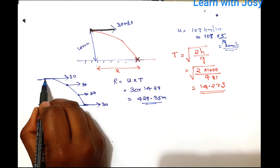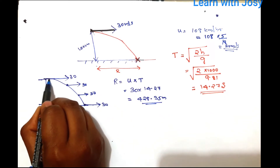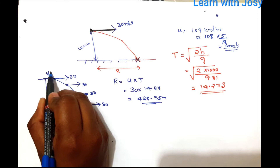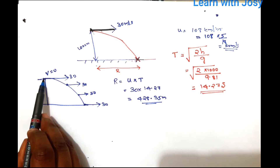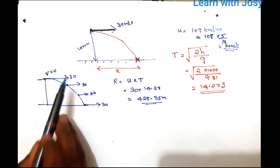At the starting point, the vertical velocity is zero, because the bomb is released horizontally. The horizontal velocity is the initial velocity.